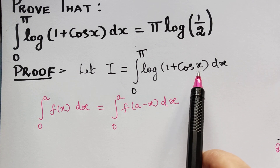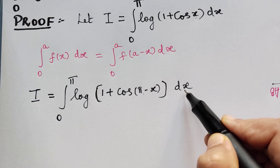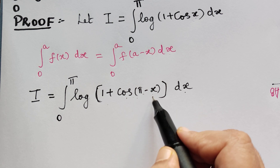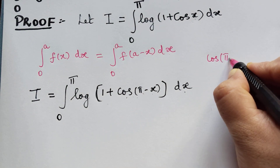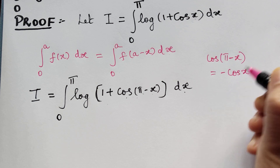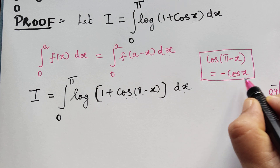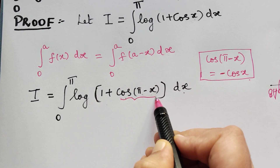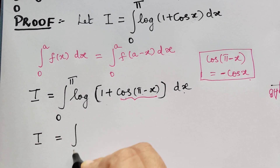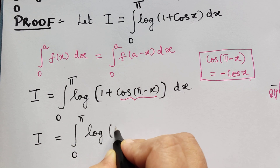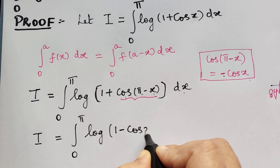So we get I equal to the integral from 0 to pi of logarithm of (1 + cos(pi minus x)) dx. From trigonometry, cos(pi minus x) is equal to minus cos x — this is because cos(180 minus theta) lies in the second quadrant and equals negative cos x. So cos(pi minus x) can be replaced by minus cos x, giving us I equal to the integral from 0 to pi of logarithm of (1 minus cos x) dx.